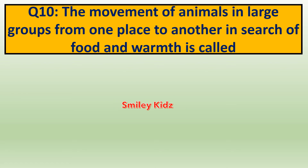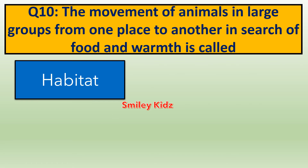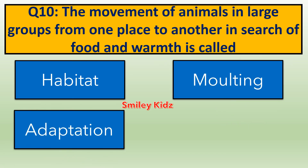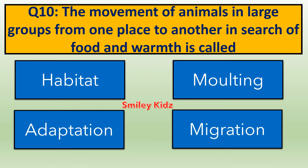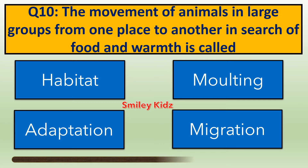Question number 10. The movement of animals in large groups from one place to another in search of food and warmth is called — options are: A. Habitat, B. Molting, C. Adaptation, D. Migration. Your time starts now. The right answer is Migration. This movement is called Migration.